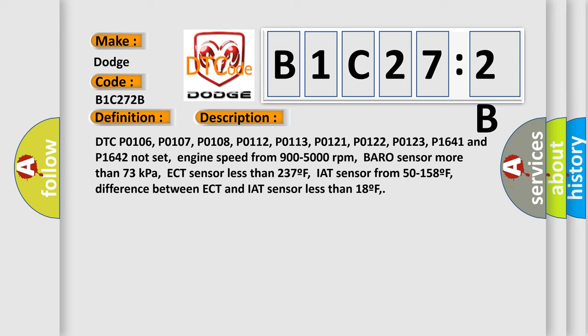DTC P0106, P0107, P0108, P0112, P0113, P0121, P0122, P0123, P1641, and P1642 not set. Engine speed from 900 to 5000 revolutions per minute, baro sensor more than 73 kilopascals.